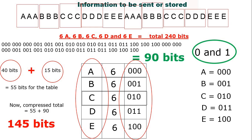Now you might notice we used three zeros for A when we could have used just a single zero, and one bit for B and C and D. But because E requires the codeword 100, we need three-bit binary numbers for every character — a fixed number of bits per character. Since the codeword length is fixed, this system is called the fixed-length system in Huffman coding. This is not the most efficient approach; the more efficient one is variable-length Huffman coding, which we will see in the next video.